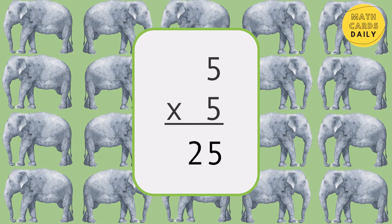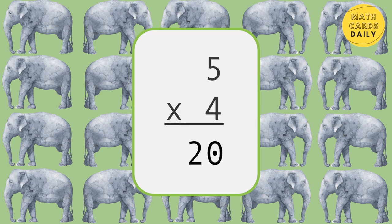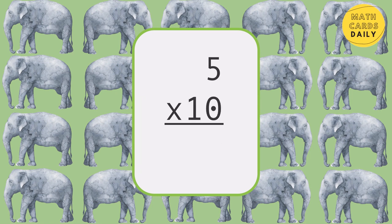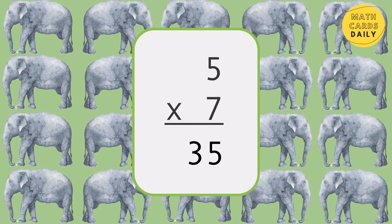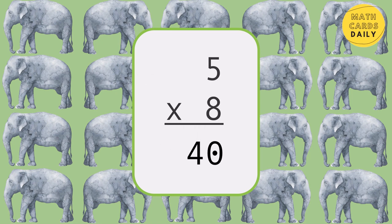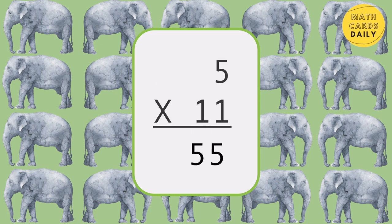5 times 5 is equal to 25. 5 times 3 equals 15. 5 times 6 is equal to 30. 5 times 4 is equal to 20. 5 times 9 is equal to 45. 5 times 8 is equal to 40. 5 times 10 is equal to 50. 5 times 2 is equal to 10. 5 times 7 is equal to 35. 5 times 9 is equal to 45. 5 times 1 is equal to 5. 5 times 8 is equal to 40. 5 times 6 is equal to 30. 5 times 11 is equal to 55.